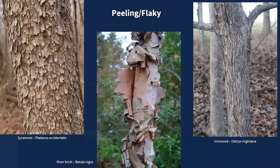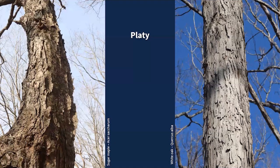Another group is peeling or flaky bark — very thin bark that tends to flake or peel, is soft or breaks easily. Examples include sycamore, river birch, and ironwood with small thin little peels. This differs from platy bark, which also has large pieces that peel or curl back but the bark is hard, not soft or thin. Platy bark peels from the side. Sugar maples when larger and white oaks are two great examples of platy bark.